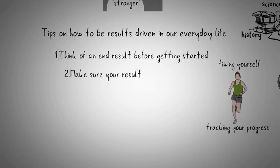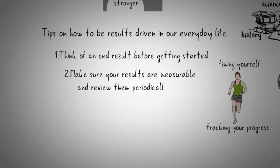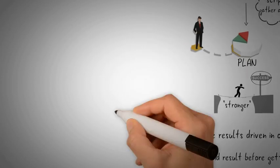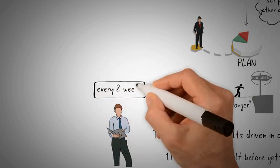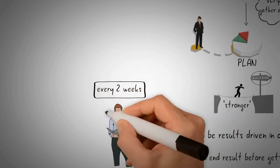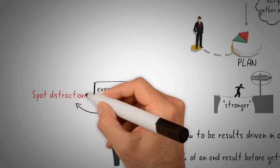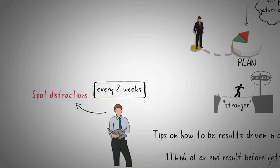2. Make sure your results are measurable and review them periodically. Make it a habit to review your plans periodically every two weeks or so. By doing this, it allows one to spot distractions and other unnecessary actions early on instead of wasting time doing work that may not add to the end results that we want.